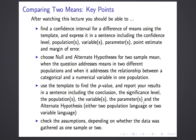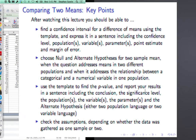After watching this lecture, you should be able to find a confidence interval for the difference of two means using the template and express it in a sentence including the confidence level, populations, variables, parameters, point estimate, and margin of error. You should be able to choose null and alternate hypotheses for the two-sample mean procedure — both when the question addresses means in two different populations and when it addresses the relationship between a categorical and a numerical variable. You should be able to use the template to find the p-value, report results in a sentence, and check the assumptions — remembering this depends on whether the data was gathered as one sample or as two. This concludes the two-sample mean lecture. Thank you.